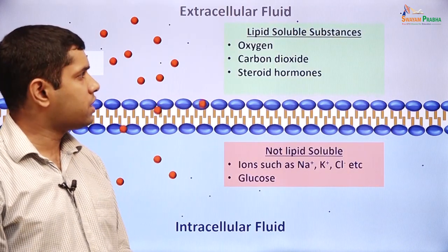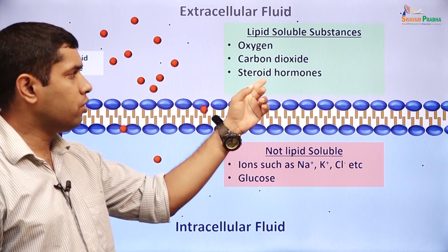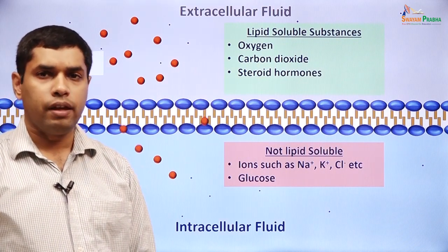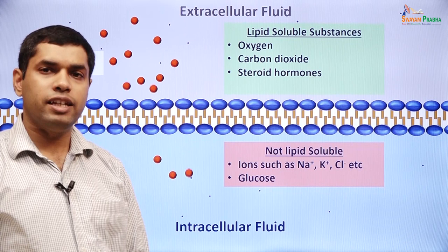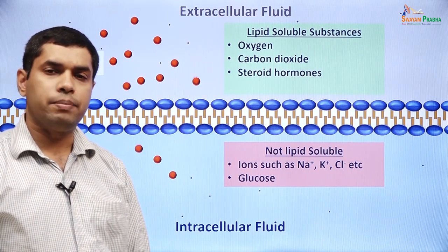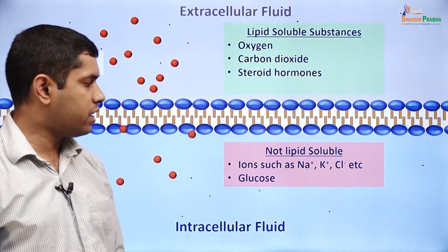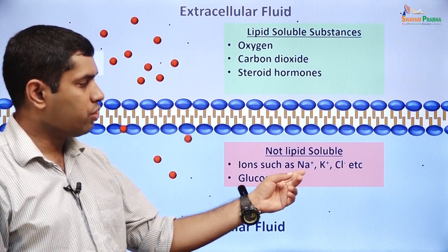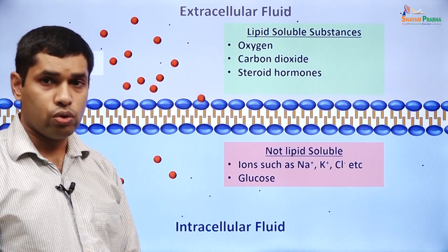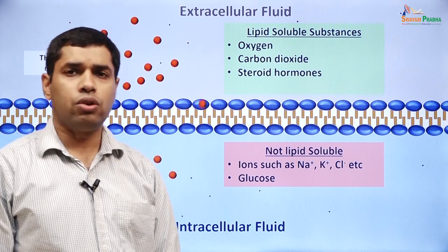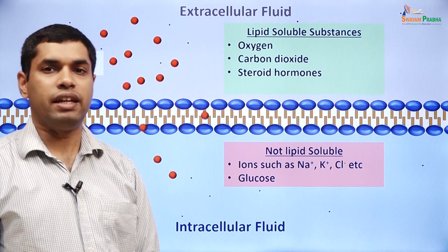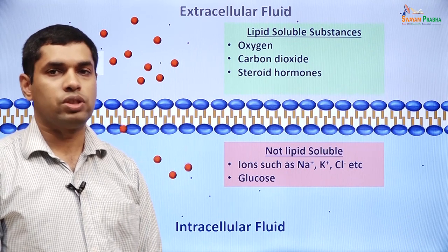Substances such as oxygen, carbon dioxide, and steroid hormones are lipid soluble and can pass through the membrane by simple diffusion. Whereas substances such as ions — sodium, potassium, chloride, etc. — glucose, and water are not freely soluble in the lipid and need some other mechanism to cross the membrane.